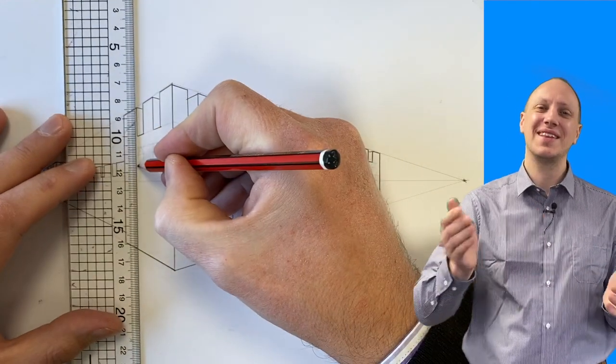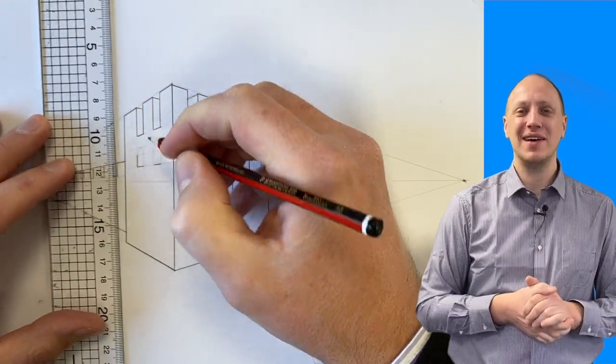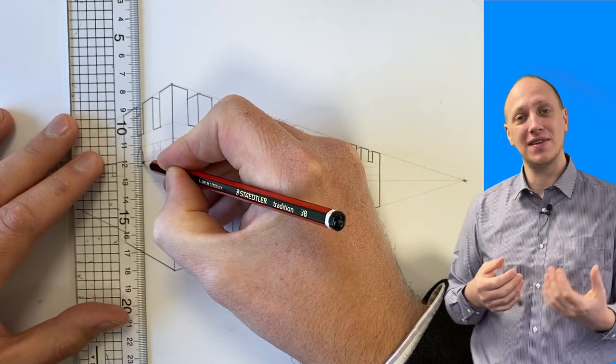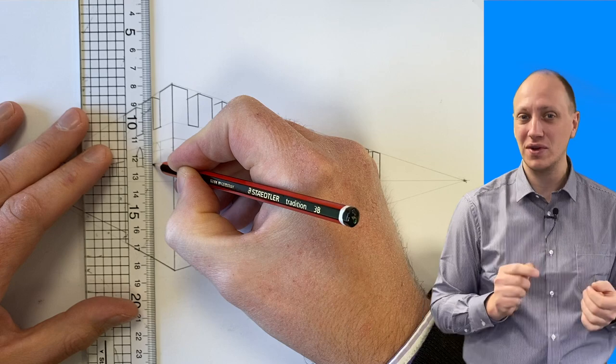And of course, when you're happy, grab your bold pencil and go over those lines and make them stand out on your drawing so that the person looking at your page sees what you want them to see.